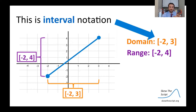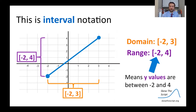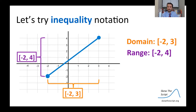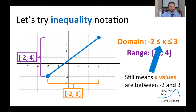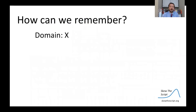Here we're using interval notation. You can see I have bracket negative two, three for the domain. This is a succinct way to give the domain and range. This interval notation means all x-values are between negative two and three, so everything between negative two and three is in our domain. Similarly, for the range, all y-values are between negative two and four. We can also write this in terms of inequalities instead of intervals — for the domain: negative two ≤ x ≤ three, and for the range: negative two ≤ y ≤ four.